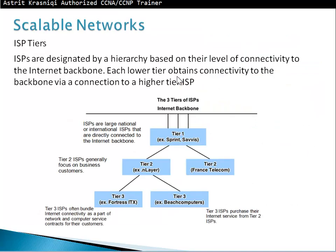The networks also have to be scalable. Imagine the Internet — the Internet has three tiers. Tier 1 are large national or international ISPs that connect directly to the Internet backbone. Tier 2 ISPs get service from Tier 1 and give services to Tier 3. Tier 3 ISPs are the ones we contact to get a connection to the Internet backbone.